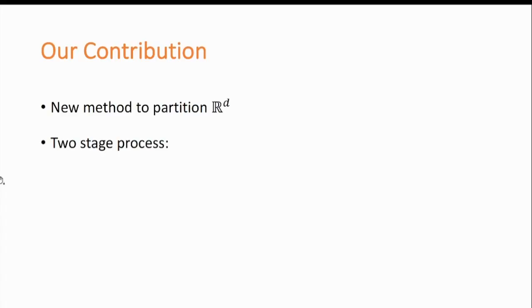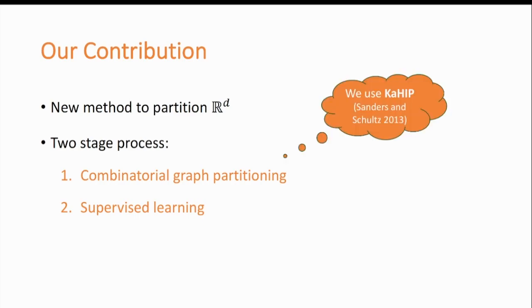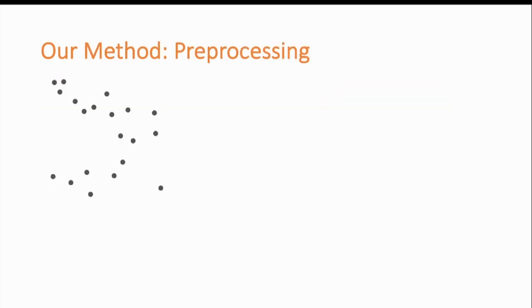Our method is a two-stage process. The first stage is combinatorial graph partitioning, and the second stage is supervised learning. For each one of these stages, we can plug any of the many existing off-the-shelf solutions, which makes our framework very general. In our implementation, we use the KAHIP algorithm in the first stage and small neural networks in the second stage. We call the resulting algorithm neural locality-sensitive hashing, or neural LSH. Let's go into a bit more detail.